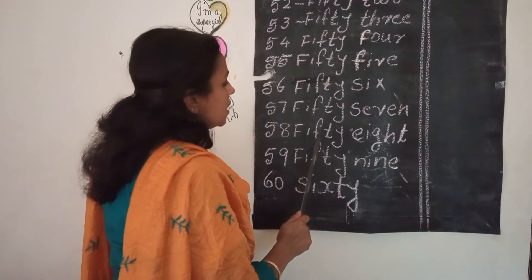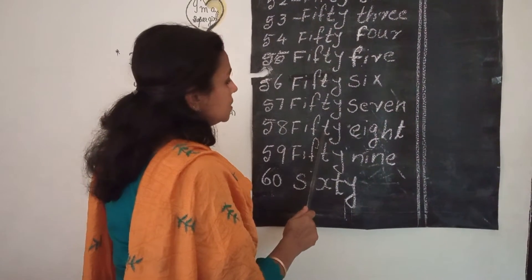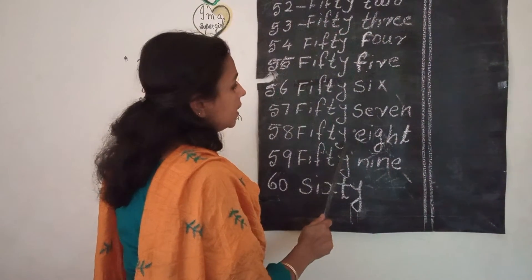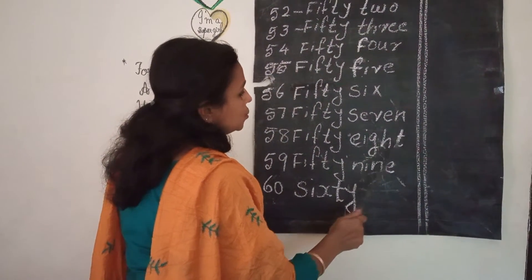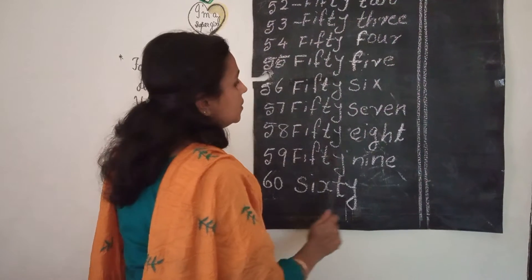58 — spelling: F, I, F, T, Y, E, I, G, H, T. Fifty-eight.